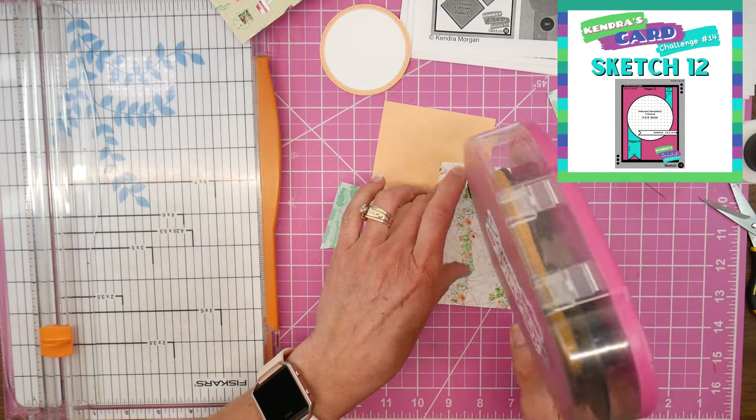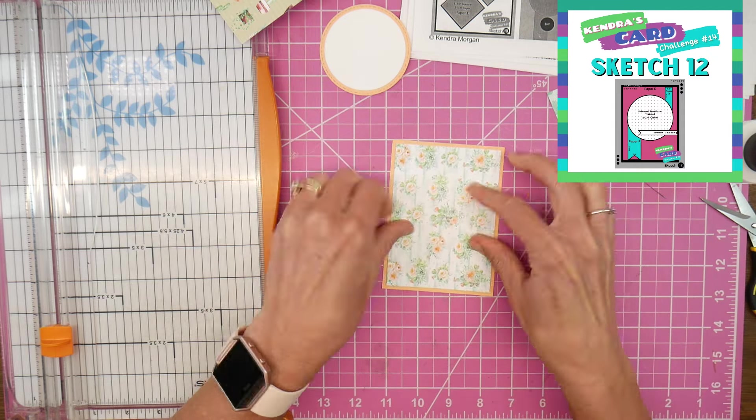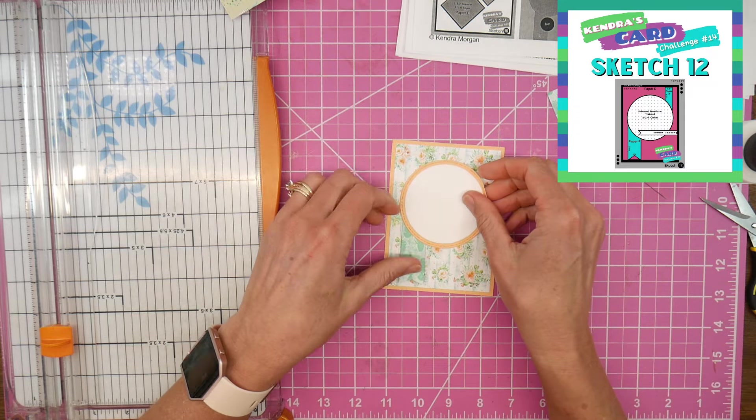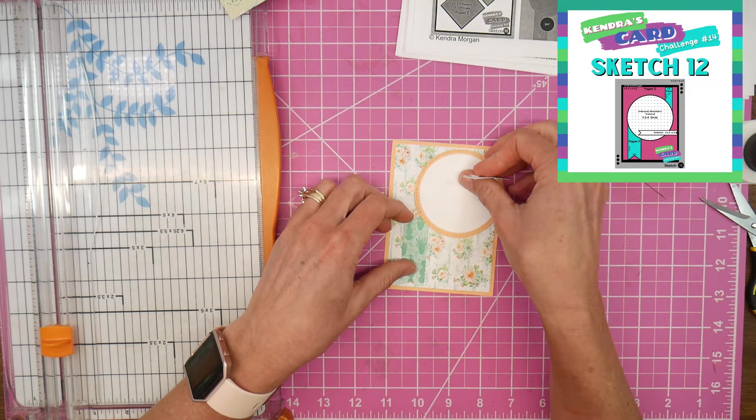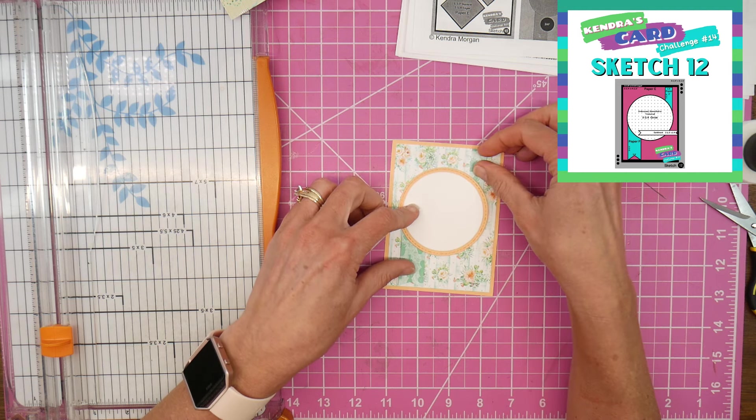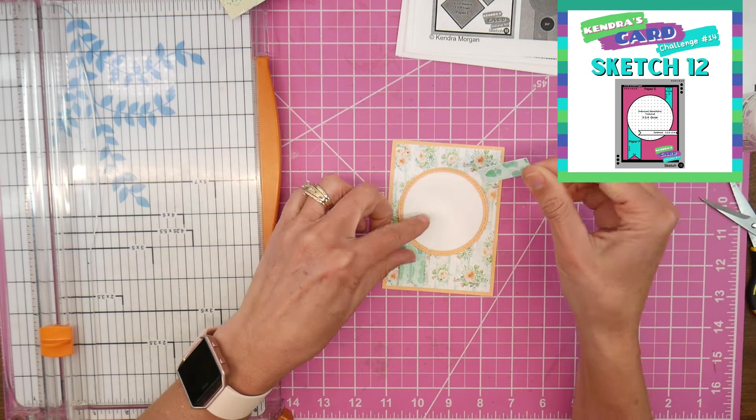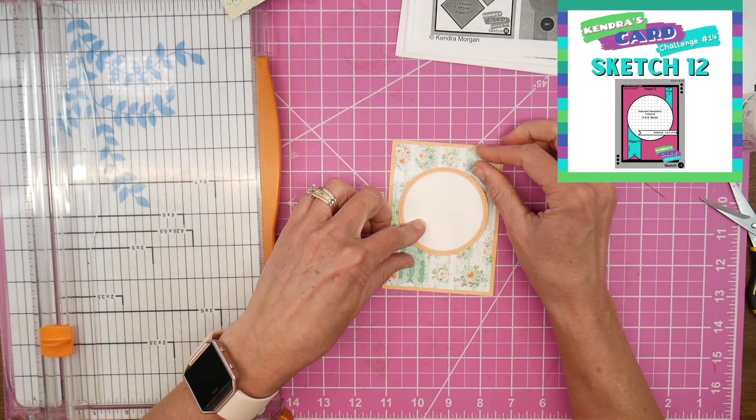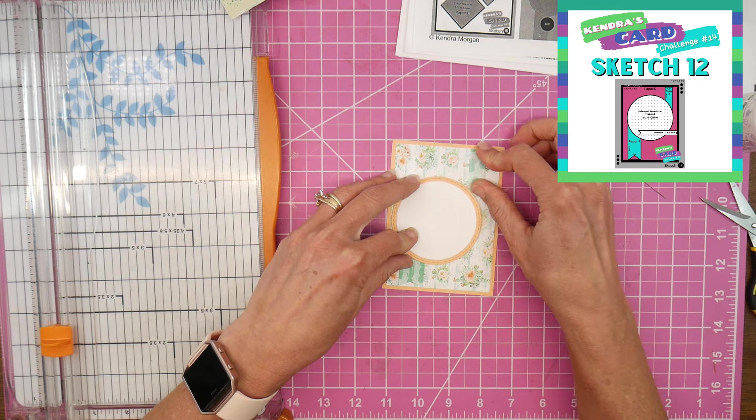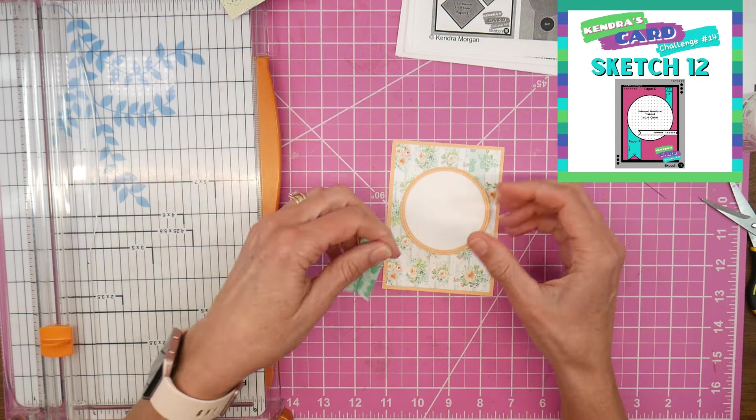I'll get all these adhered down. Again, I said this was a hop, so there will be a playlist linked in the description box below for you that you can click on and just kind of binge watch all of the participants in the hop and see what Not Too Shabby Shop products they've used and the beautiful projects that they have made. I wanted to kind of hold that circle in place temporarily so I can figure that will help me line up those strips where I wanted them to go before I put my circle down permanently.